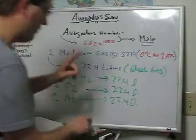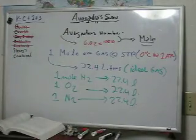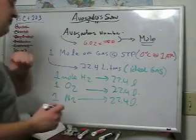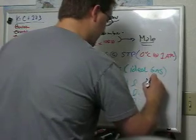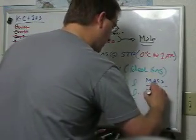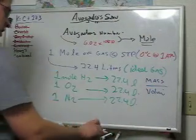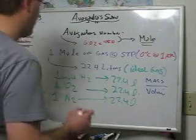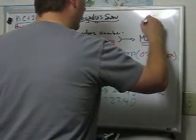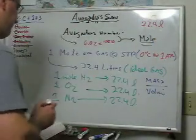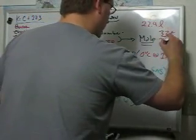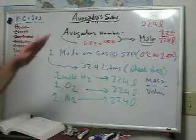That's really cool because it can help us figure out the density, right? Density is nothing more than mass divided by volume. If all the gases take on a certain volume, I can compare the densities of all the gases. Hydrogen, for example, is just going to be one gram divided by 22.4 liters — that will give me the density. Oxygen is going to be 32 grams divided by 22.4 liters, and so on and so forth.